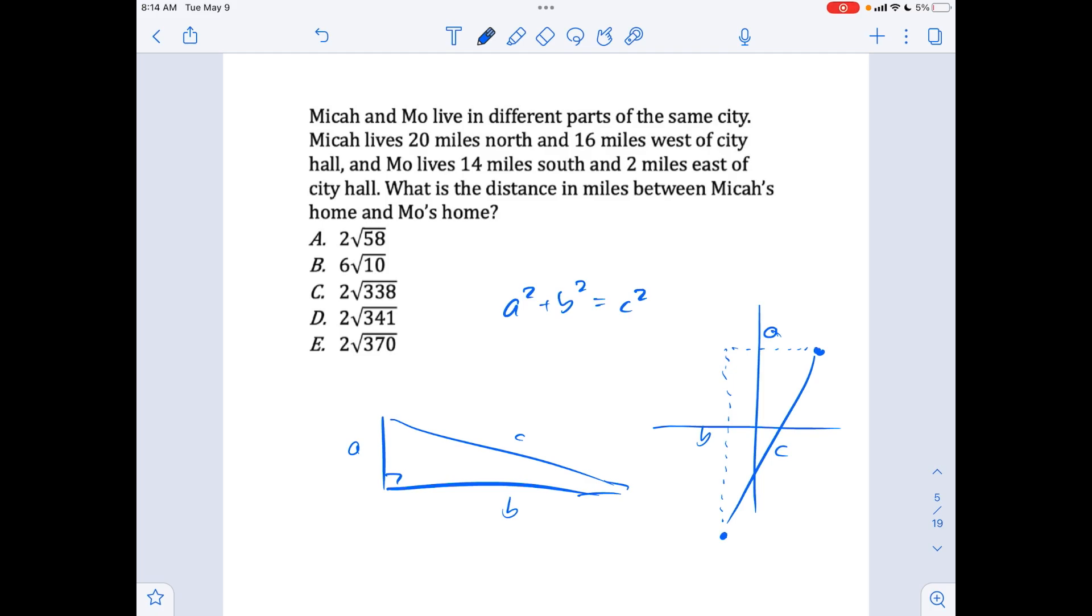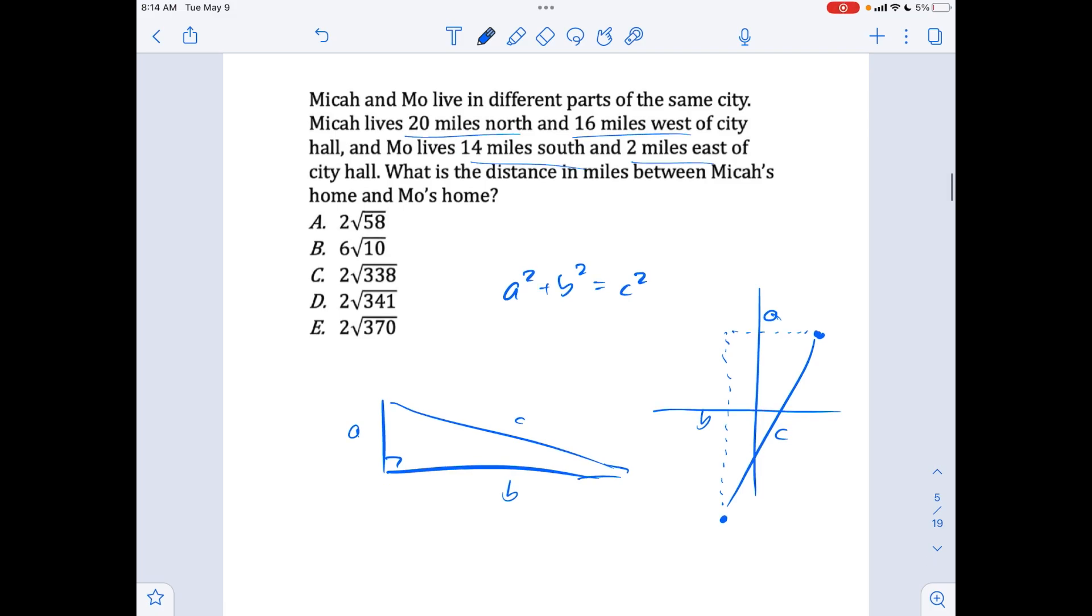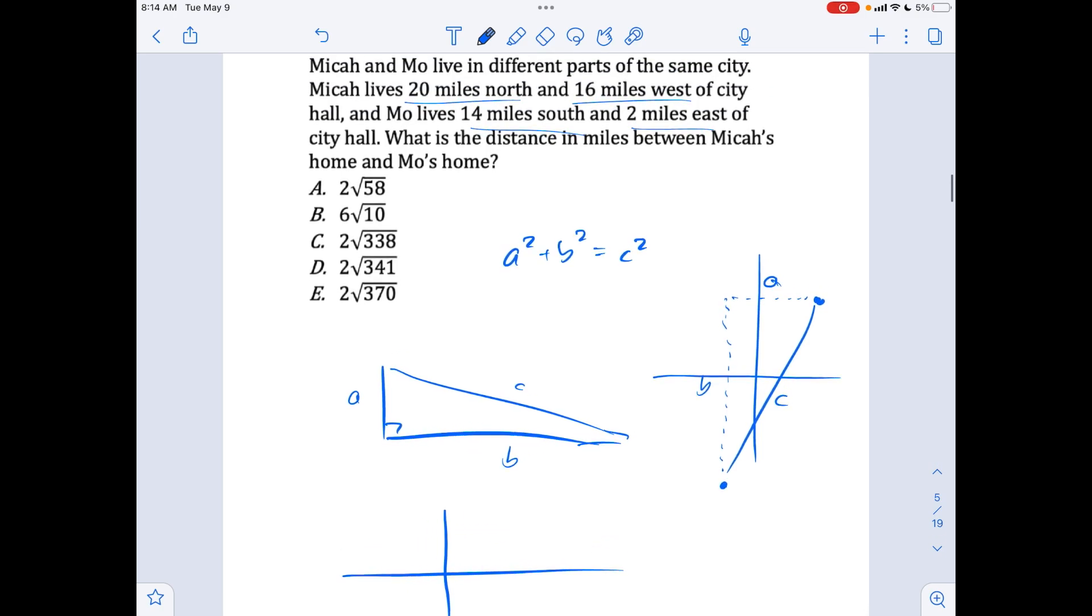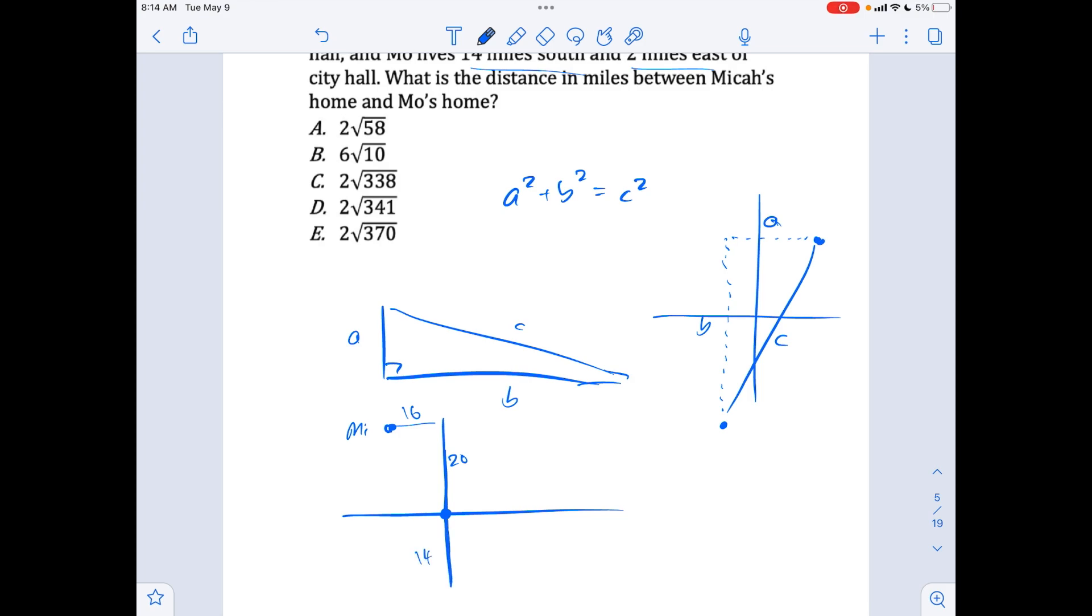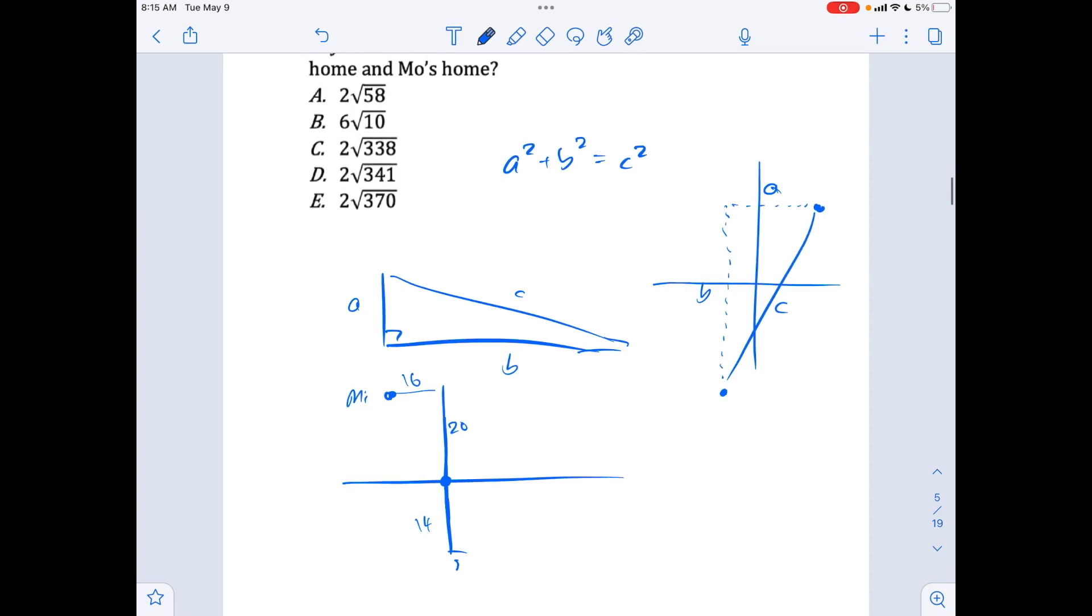That's what this problem type is asking you about. So let's do this one. Micah and Mo live in different parts of the same city. This person lives 20 miles north and also 16 miles west of City Hall. And this person lives 14 miles south and two miles east. So what's the distance between their homes? Let's make a grid with miles. Micah lives 20 north and 16 west. So let's go up for north and then left for west. So 20 and then 16. And then Mo is 14 south and 2 east. So we want to find this distance right here.